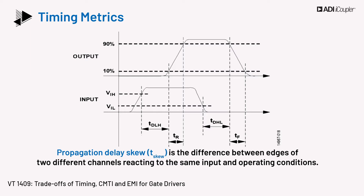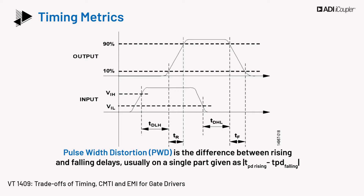Propagation delay skew is the difference between edges of two different channels reacting to the same input and operating conditions. Skew may be defined as per part for dual channel parts, or part to part for single channel parts. Pulse width distortion, PWD, is the difference between rising and falling delays, usually on a single part, and is given as TPD rising minus TPD falling.